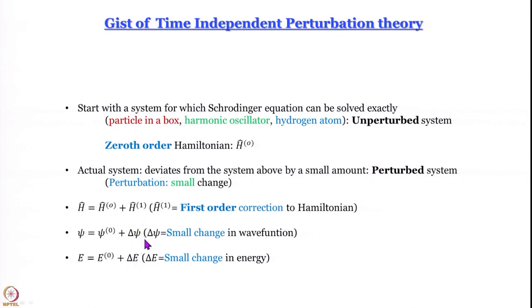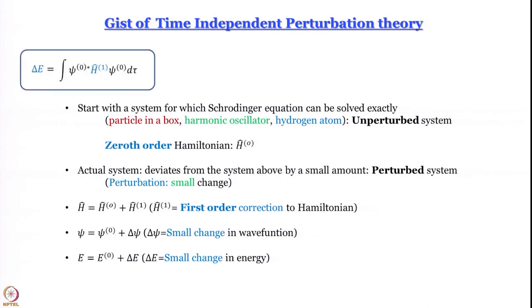We could also have second-order, third-order terms and so on. In fact, for the anharmonic oscillator, people have gone up to 13th-order perturbation to get a closer match to experimental energies. But to start with, let us stick to first order. For first-order perturbation we have proved that δE — the change in energy — is the integral of ψ⁰* times the first-order correction to the Hamiltonian H' operating on ψ⁰, integrated over all space.